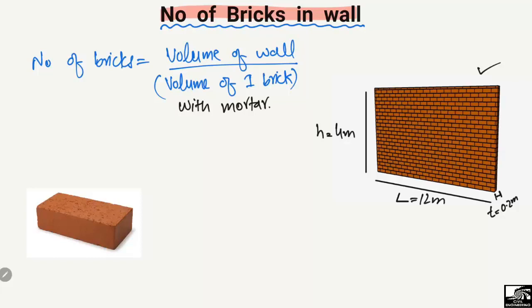To use this formula, you find the volume of the total wall and the volume of one brick used in the wall. Since there are a lot of bricks, if you find the volume of one brick along with the mortar, you can find out the total number of bricks used in this wall.